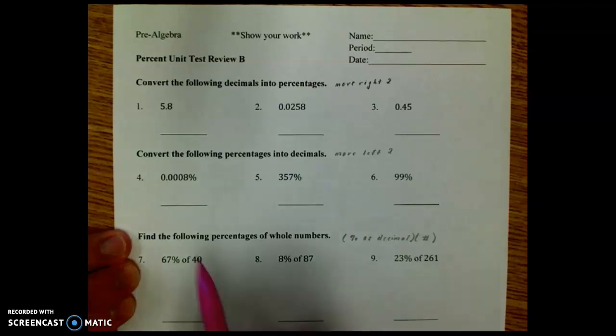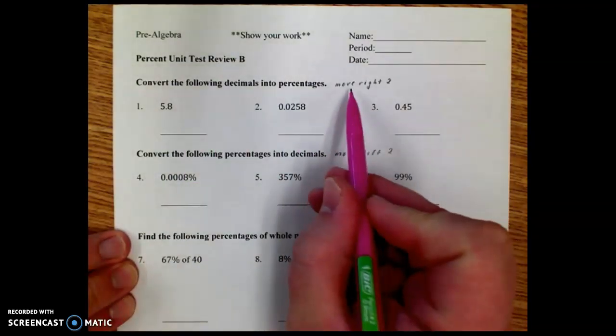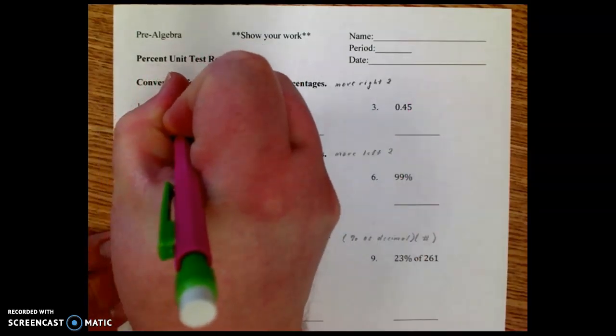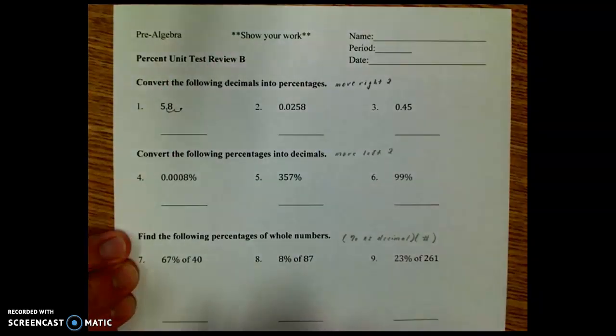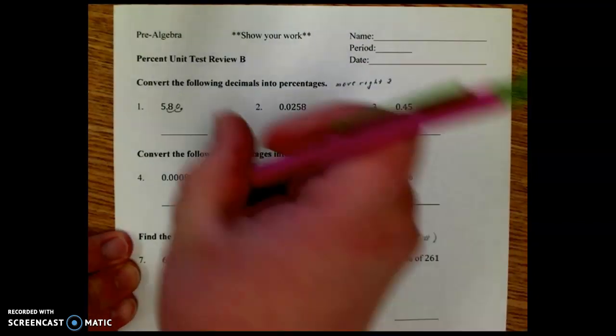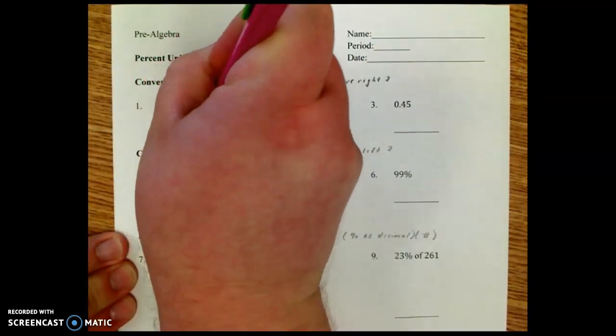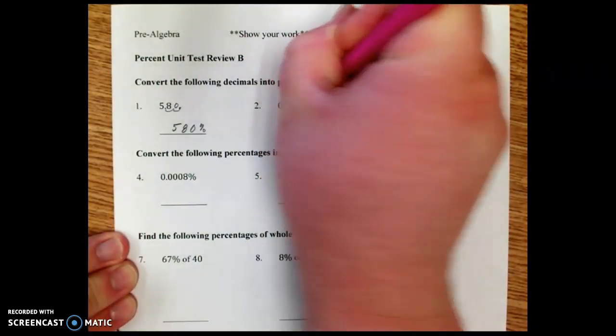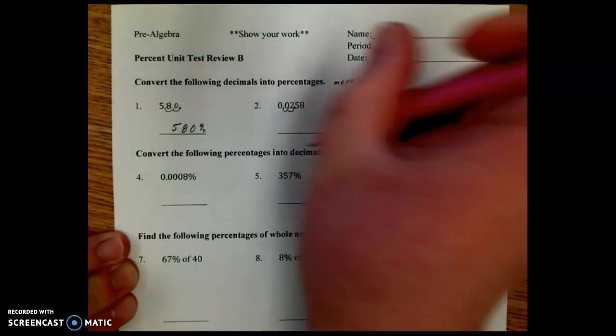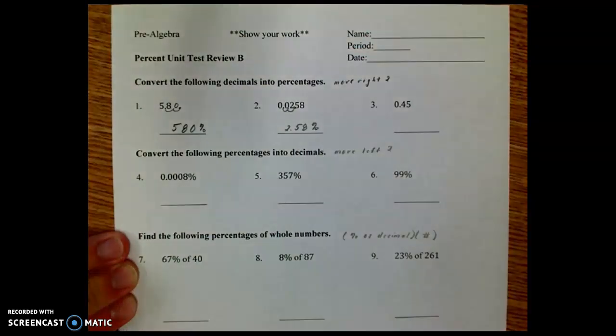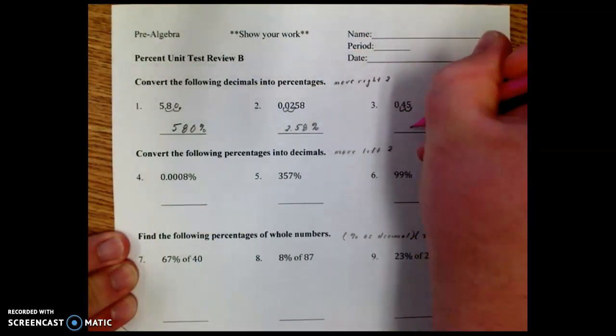The first section says convert the following decimals into percentages which means you need to move right two units. So here we're going to move right two, one, two, put a new decimal point and fill it in with a zero. So then that would be 580%. And we do that for each one, one, two, that would be 2.58%. And the last one, one, two, that would be 45%.